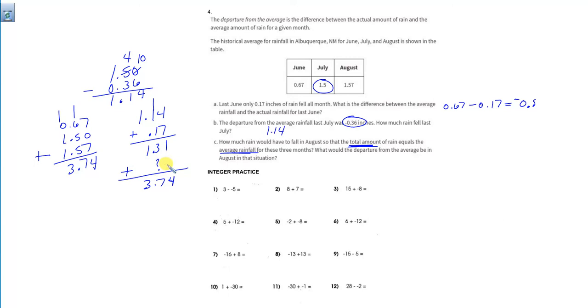Well, we're going to have to do subtraction to find out what that is. So we'll do that up here, 3.74 minus 1.31, 3, 4, and 2. So we need to get 2.43 inches of rain in August to get back on average.